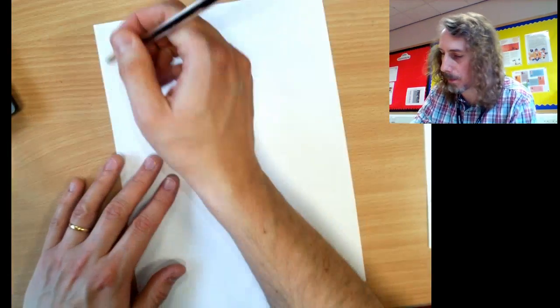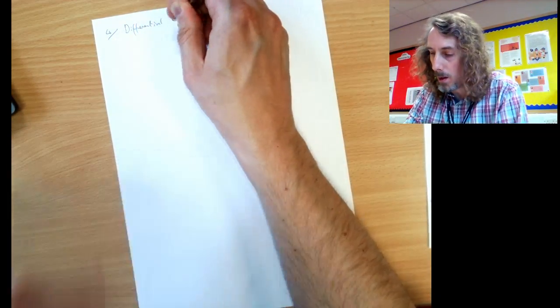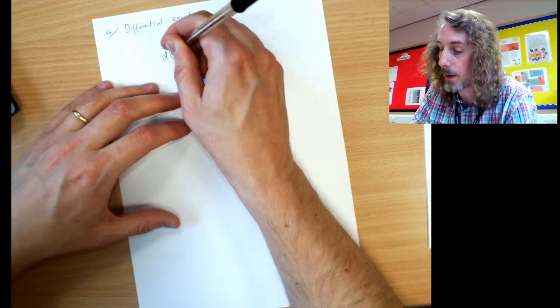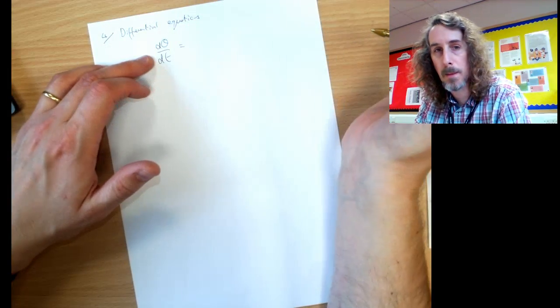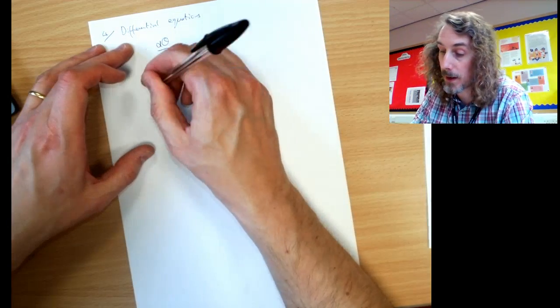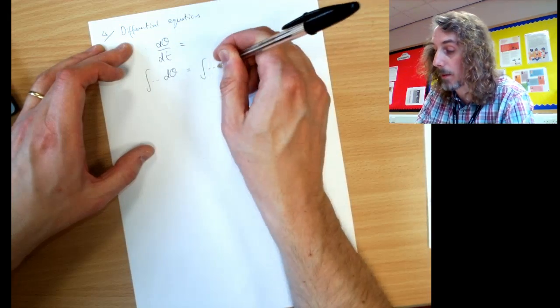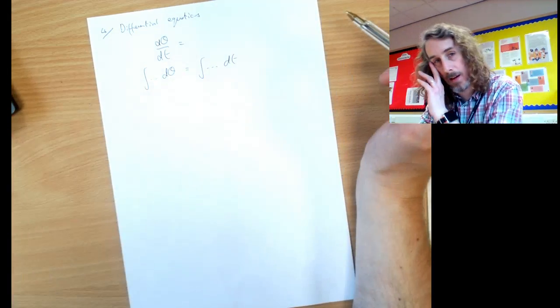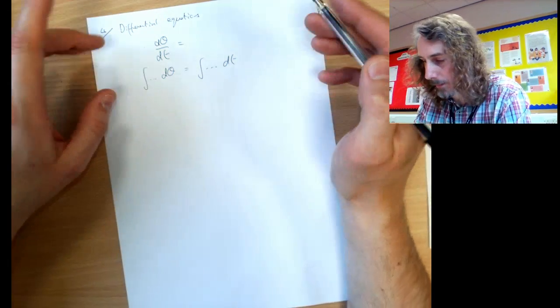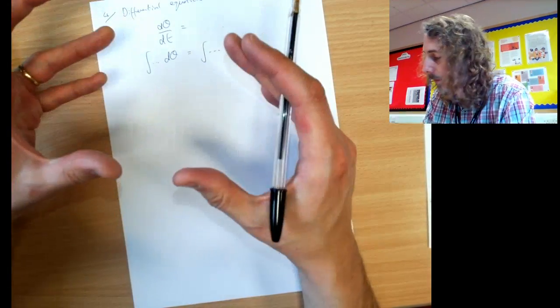Top tip number 4. Differential equations. With differential equations you're going to have something like d theta by dt equals something. You're going to get everything involving theta on one side, everything involving t on the other side, and then integrate both sides. Remember, you only need one constant of integration when you've finished. On your next stage, put plus C in there somewhere, but you only need to do it once.